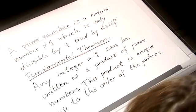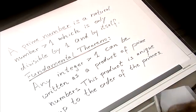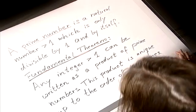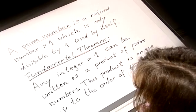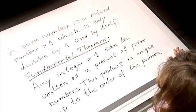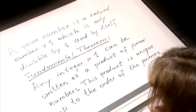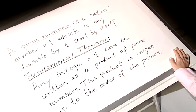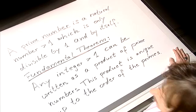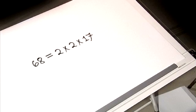In order to show that there are infinitely many of these numbers, we will use the Fundamental Theorem of Arithmetic, which says any integer greater than one can be written as a product of prime numbers. It says even more: this product is unique up to the order of the primes.